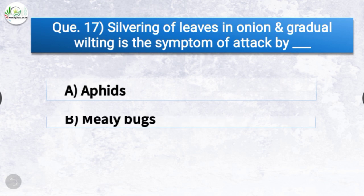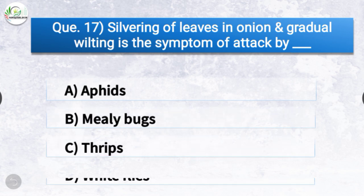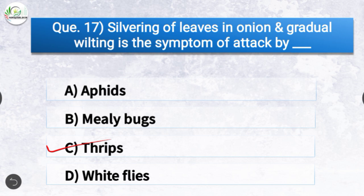Question number seventeen: Silvering of leaves in onion and gradual wilting is the symptom of attack by dash. The options are aphids, mealybugs, thrips, or whiteflies. The correct answer is option C, thrips — silvering of leaves in onion and gradual wilting is the symptom of attack by thrips.